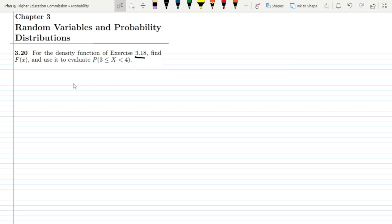So in exercise 3.18 we had f(x) which was equal to 2 divided by 27 multiplied by (1 + x), from x equal to 2 to x equal to 5.